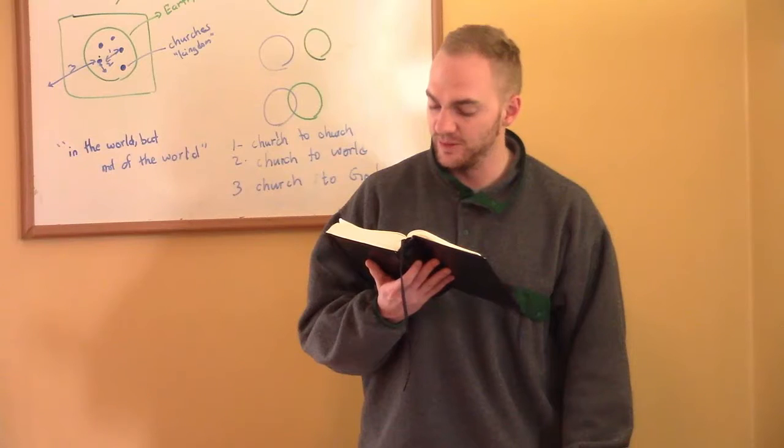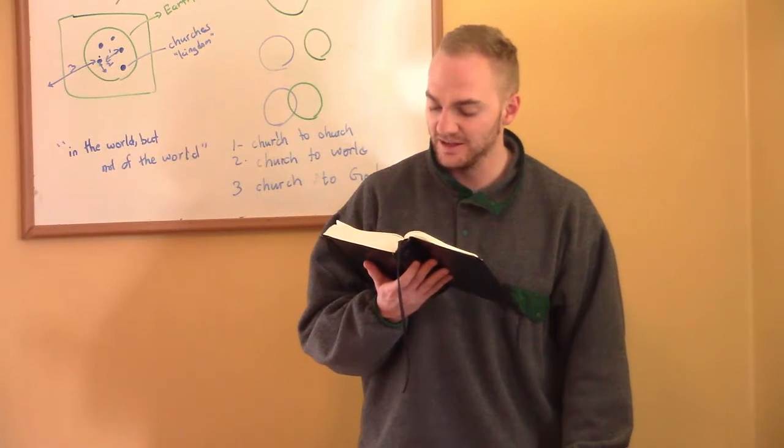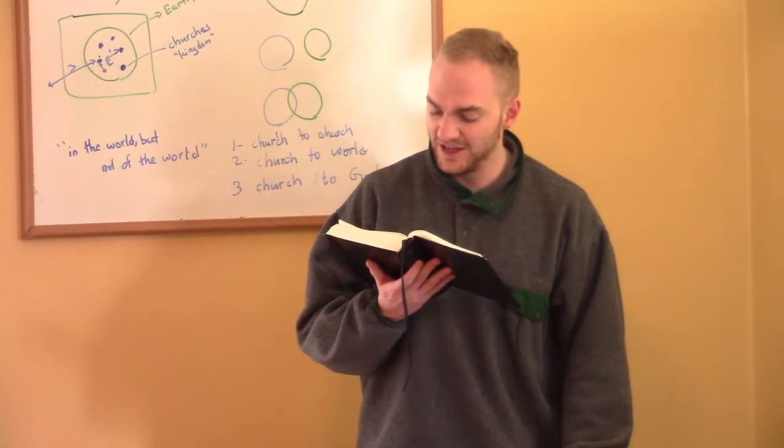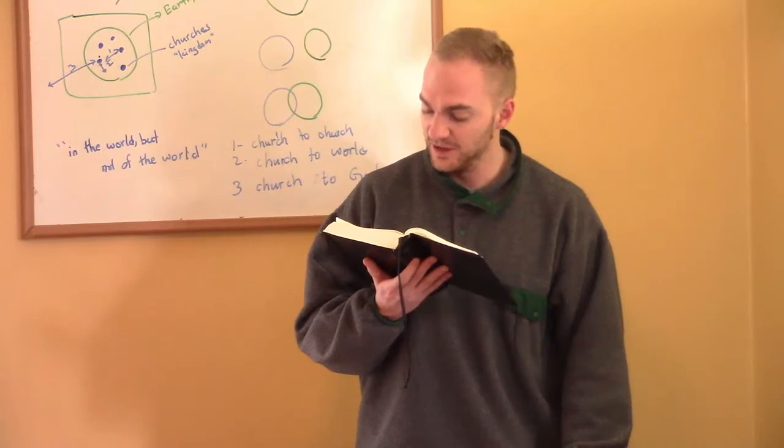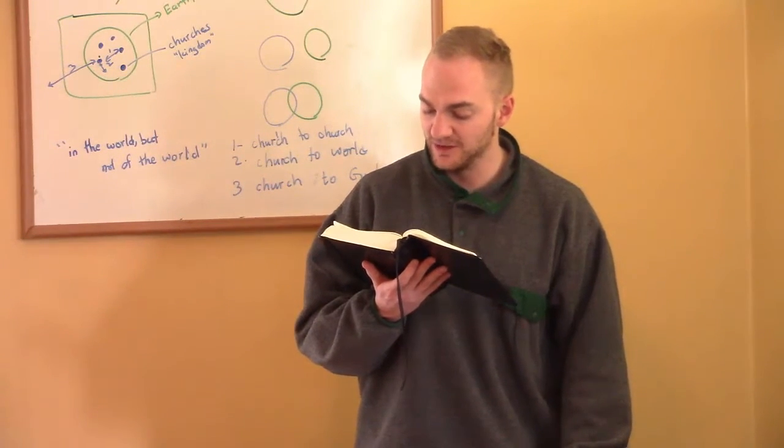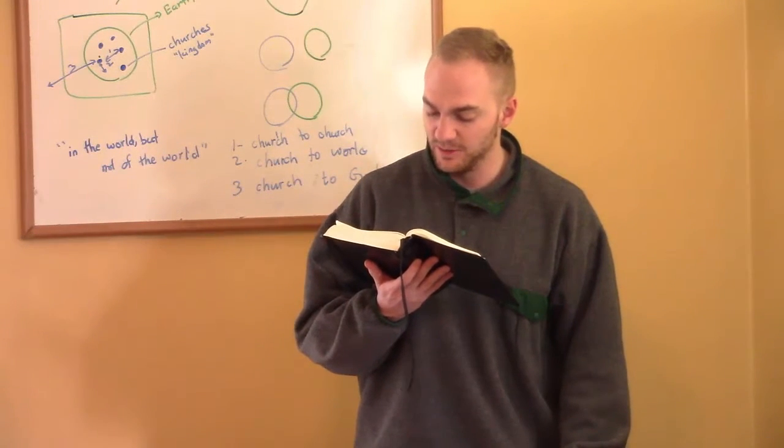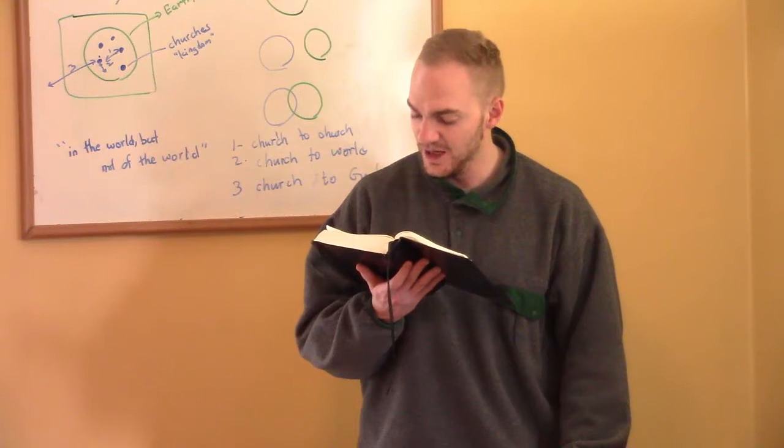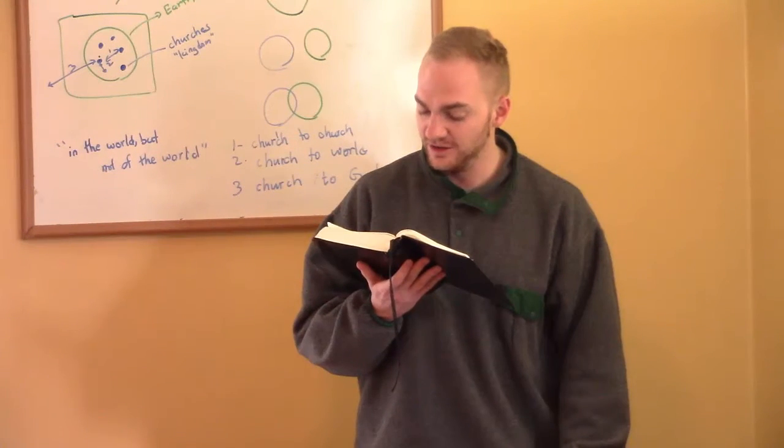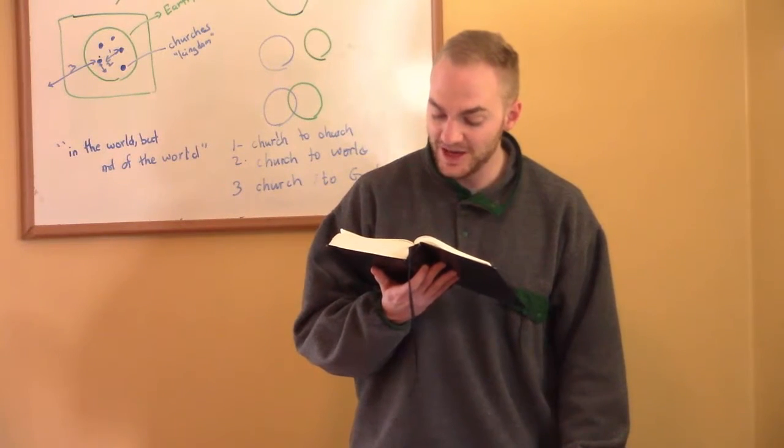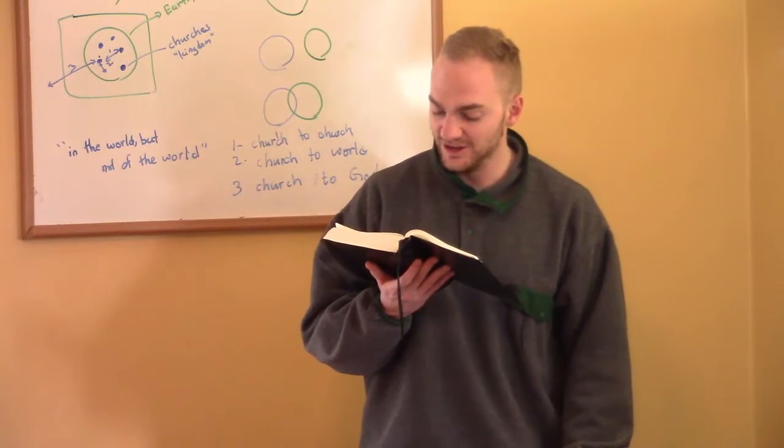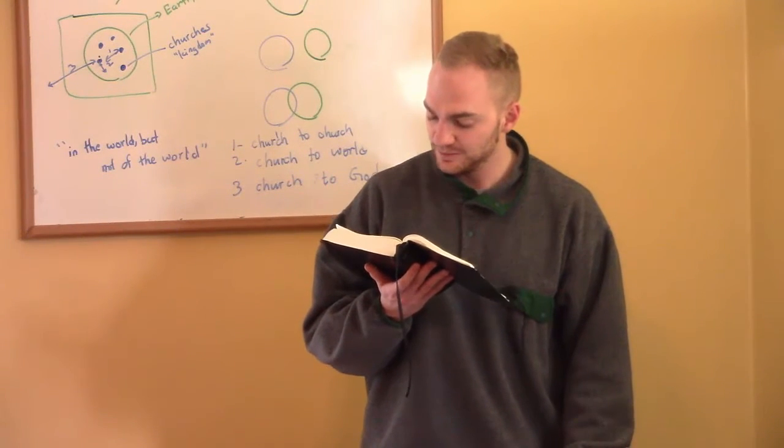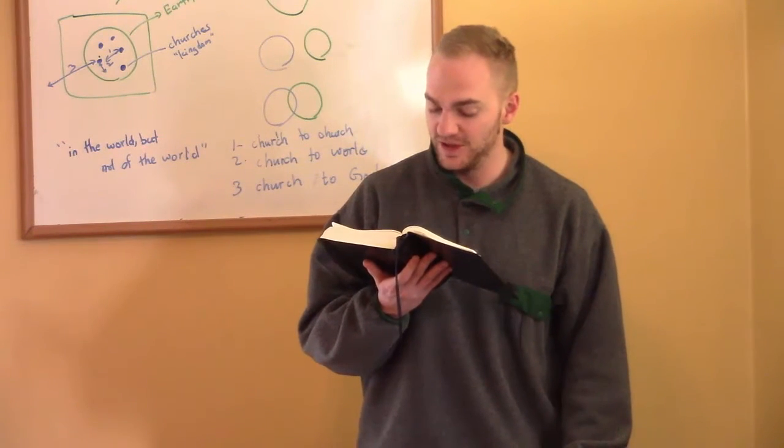So Samuel told all the words of the Lord to the people who were asking for a king from him. He said, These will be the way of the king who will reign over you. He will take your sons and appoint them to his chariots, and to be his horsemen, and to run before his chariots. He will appoint for himself commanders of thousands and commanders of fifties, and some to plow his ground and to reap his harvest, and to make his implements of war and the equipment of his chariots. He will take your daughters to be perfumers and cooks and bakers. He will take the best of your fields and vineyards and olive orchards and give them to his servants. He will take the tenth of your grain and your vineyards and give it to his officers and to his servants. He will take your male servants and female servants and the best of your young men and your donkeys and put them to his work. He will take the tenth of your flocks, and you shall be his slaves.